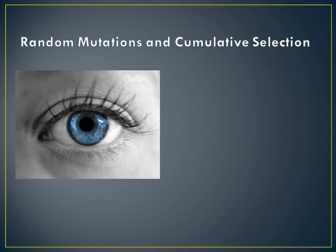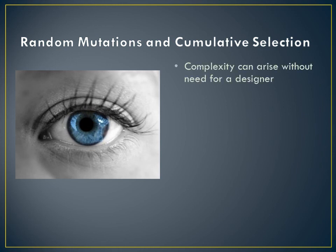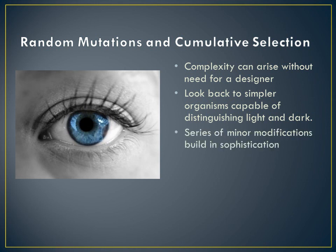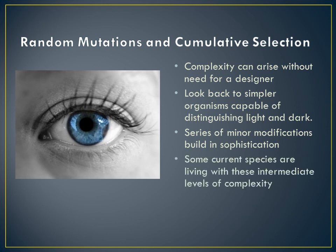Using the example of the eye, Dawkins says that minor adjustments successively made can move such an item from basic sensing of light and dark to the complex eye we see in humans today. He points to the existence of lower species that have these simpler versions of the eye existing in nature now. All of this means that Dawkins rejects the need for postulating the existence of a designer based on the existence of complexity in nature. This can be accounted for purely with reference to natural laws outlined initially by Darwin and developed by scholars like Dawkins.